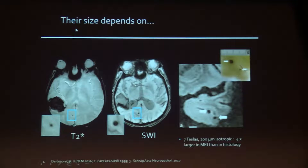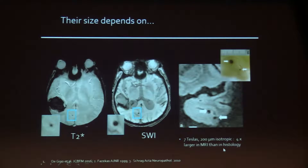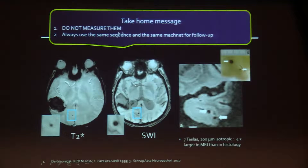It's not only the number that depends on parameters — the apparent size also depends on them, which is another reason not to measure microbleeds. The same microbleed looks much smaller on T2 star than on susceptibility-weighted imaging. At 7 Tesla with very high resolution imaging, microbleeds appear four times larger on MRI than on histology. The take-home message: do not measure them. It is a waste of time. Always use the same sequence and the same magnet for follow-up if you want to track new microbleeds.